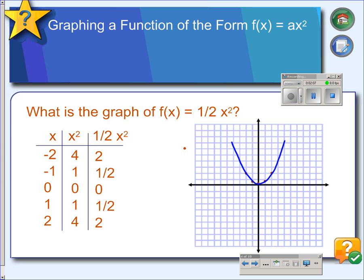This graph is a compression of the parent function because the values that we would expect to be, like, say, when x is 2, y is 4, that point has been pushed down to 2. And it's been actually pushed down, so it's half the size that it should be.